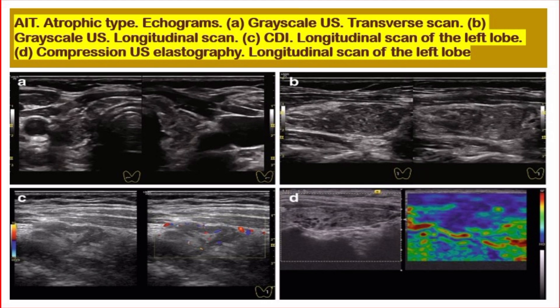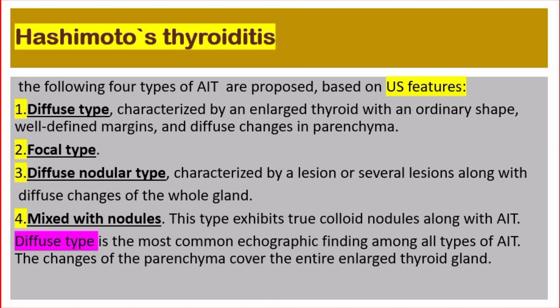The gland is often difficult to distinguish from the surrounding tissue. This picture shows autoimmune thyroiditis atrophic type echograms — (a) gray scale ultrasound transverse scan, (b) gray scale ultrasound longitudinal scan, (c) color Doppler imaging longitudinal scan of the left lobe, (d) compression ultrasound.